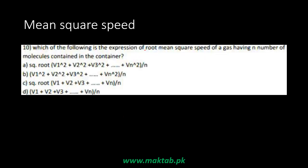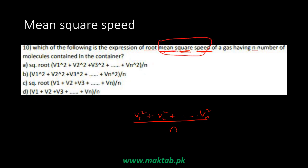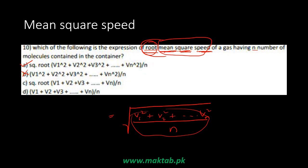MCQ on root mean square speed of a gas having N molecules: we square the speed of all molecules, sum them, and divide by the total number of molecules N to get the mean square speed. Then we take the square root to get the RMS speed. Option A shows the square root taken of the whole quantity — this is correct. Option B is missing the square root, option C has speeds not squared, and option D has neither.